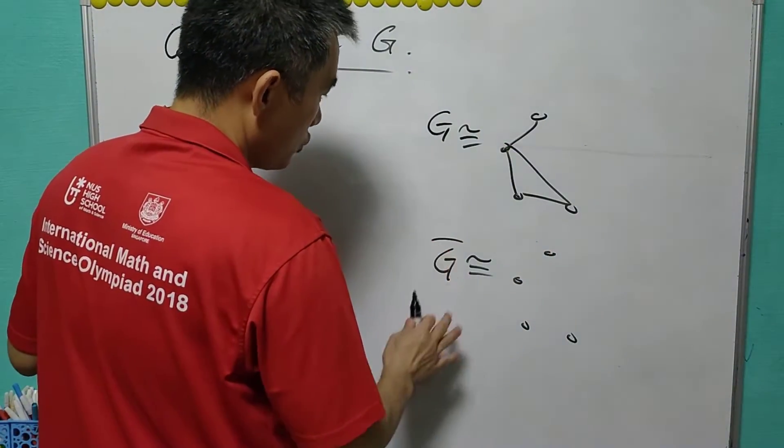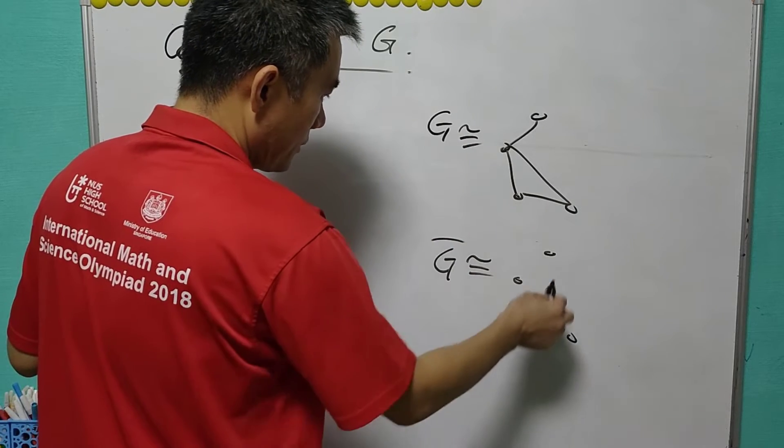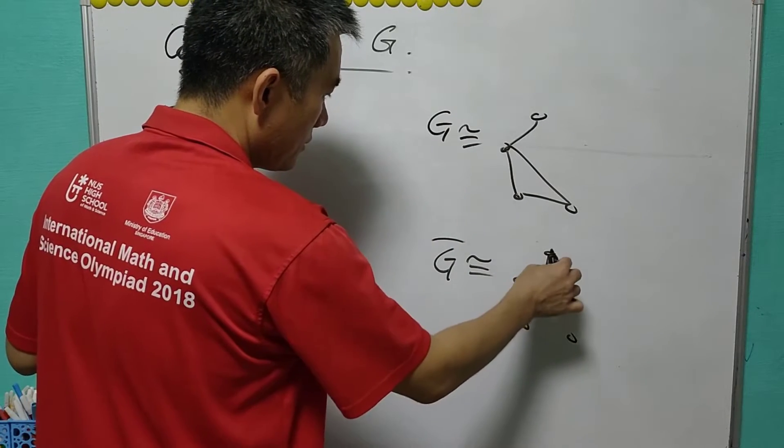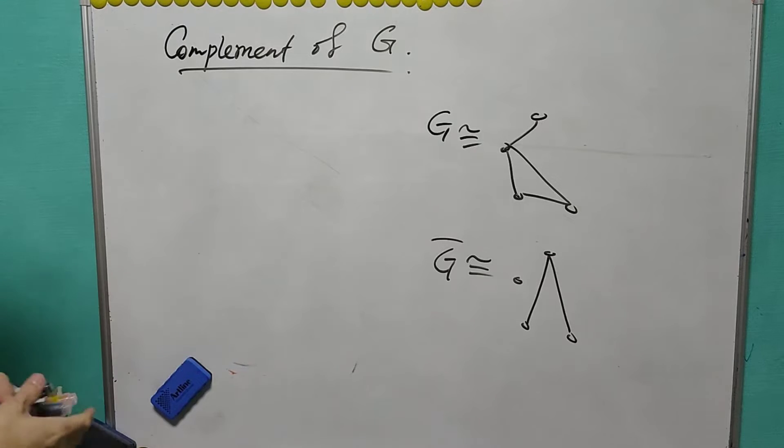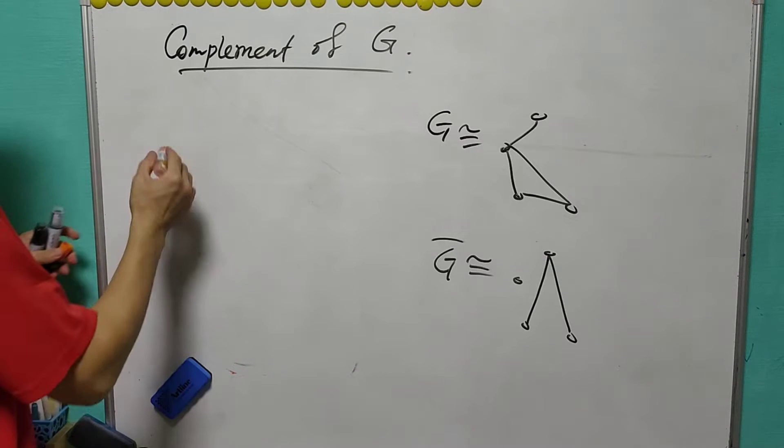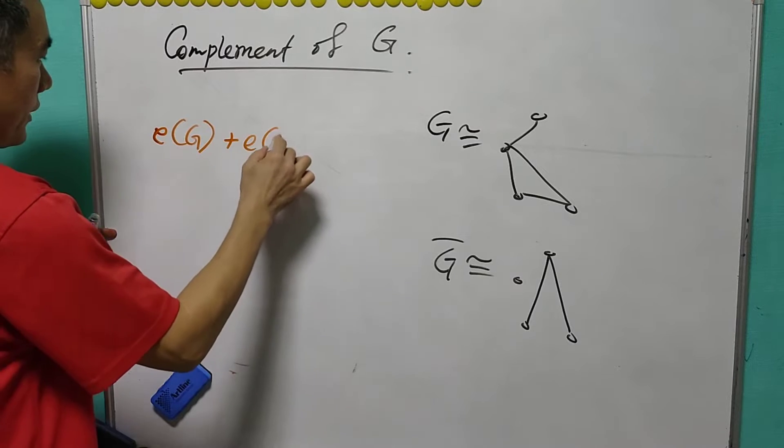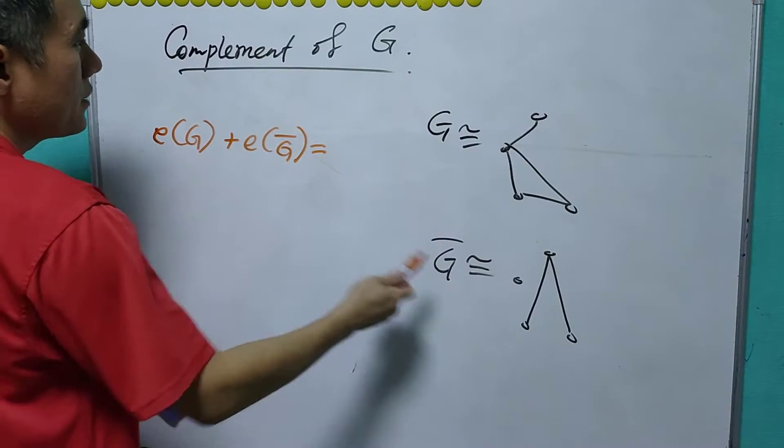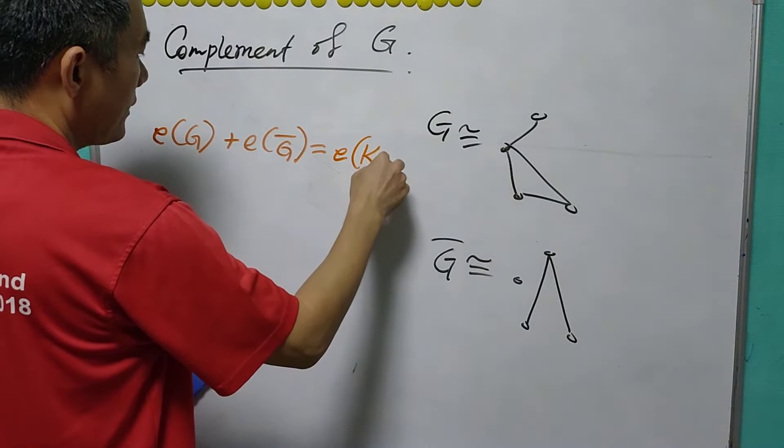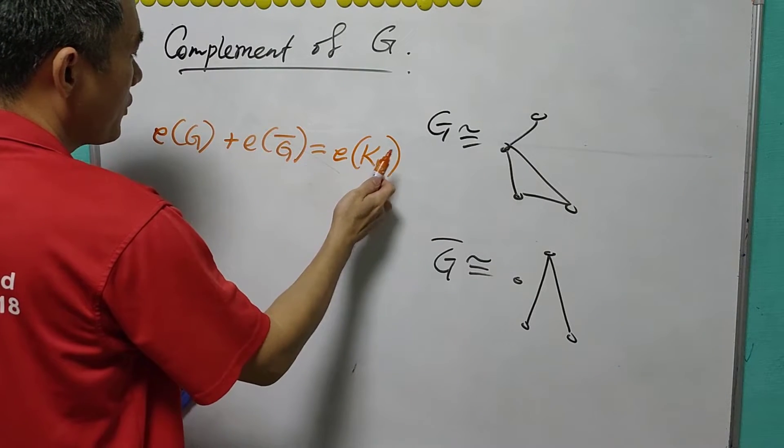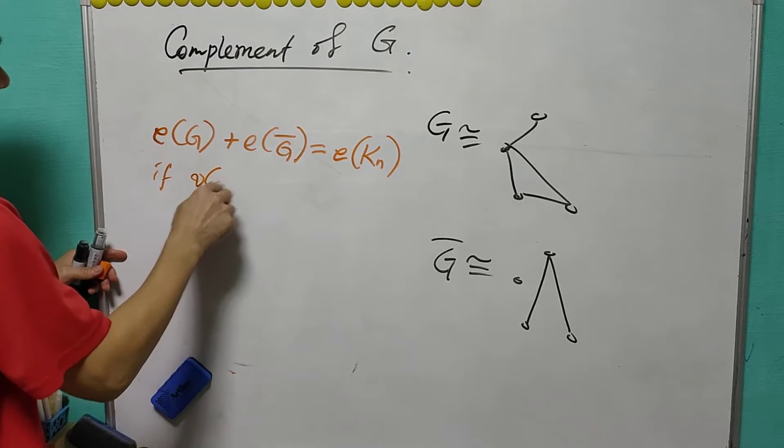So this will be the graph. The first result that we can see is that the number of edges in G plus the number of edges in G bar will equal to the number of edges in KN, the complete graph with N vertices, if the size of G is equal to N.